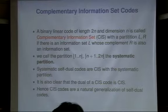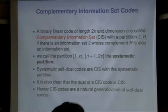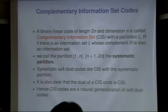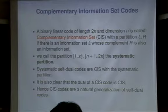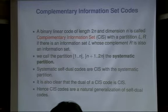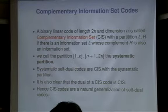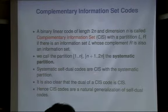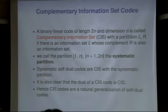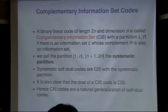If the first N columns and the other N columns each correspond to information sets, we say systematic partition. Systematic self-dual codes have a generator matrix of the form [I | A] where A and A-transpose equals identity, which guarantees that A is invertible. So you get a CIS code with a systematic partition. CIS codes include self-dual codes — basically [I | A] with some invertible matrix A.